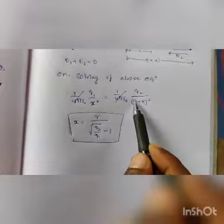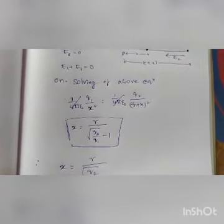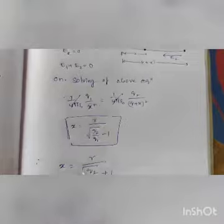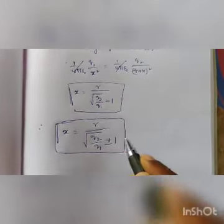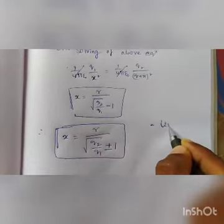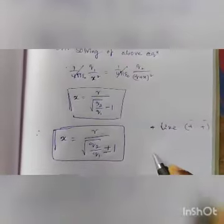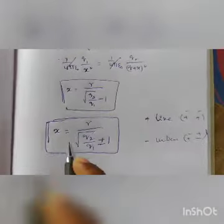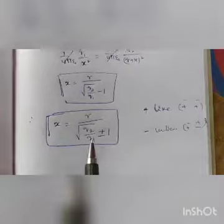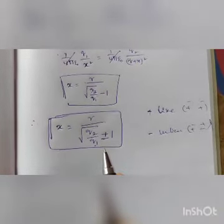The general formula is x = r / (√(Q2/Q1) ± 1). Use +1 when the charges are like charges (both positive or both negative), and use −1 when the charges are unlike charges (one positive, one negative). Many exam problems are based on this equation, so observe it carefully.